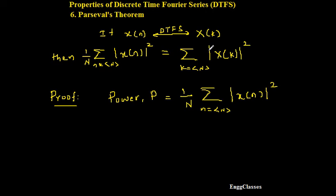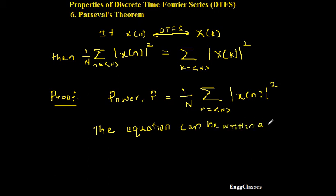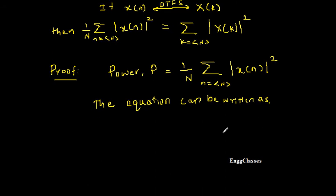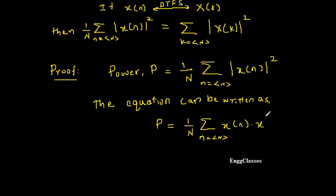So the equation can be written as follows. I will use the concept of complex conjugate and write P, which is equal to 1 over N, summation n over the range capital N. The magnitude of x of n square can be written as x of n into x star of n.